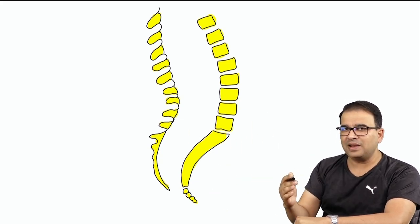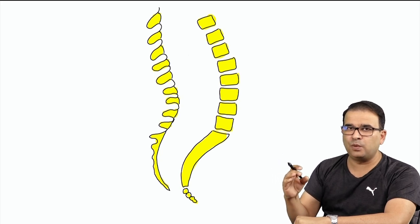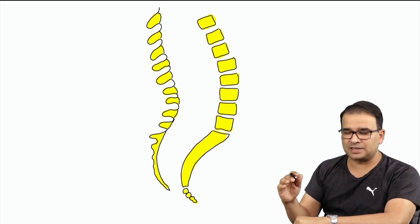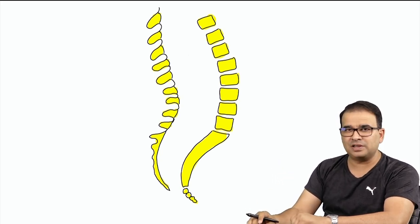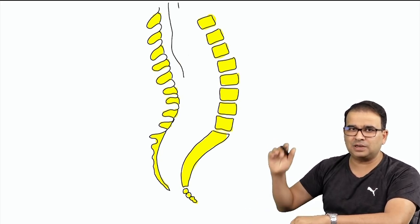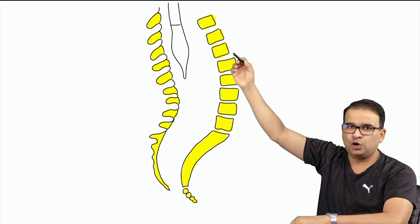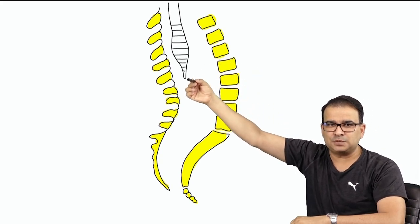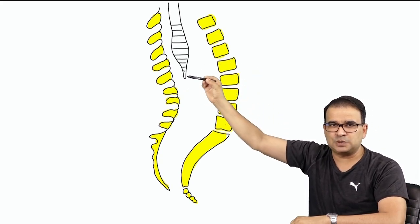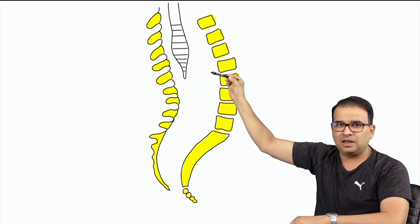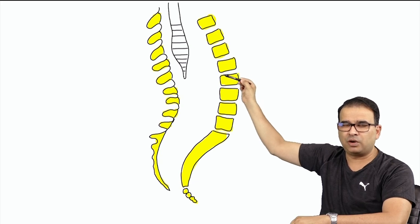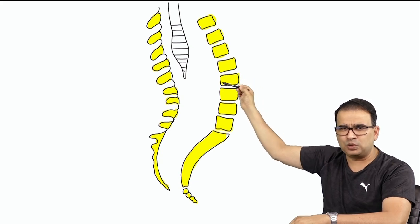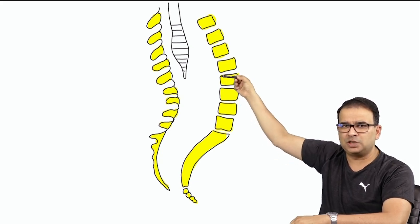The spinal cord in an adult extends till the lower border of L1 vertebra. So, this is the end of the spinal cord, corresponding to the lower border of the first lumbar vertebra. It can go to L2 also, but usually we say to the lower border of L1.